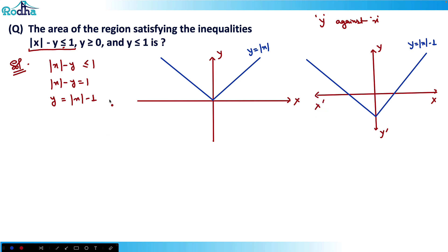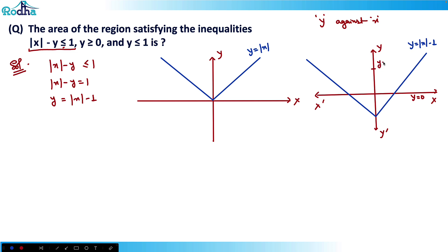Now there's the graph of y = |x| - 1. I need to see the portion where y ≥ 0 and y ≤ 1. y ≥ 0 means above the x-axis. y = 1 is a horizontal line, so the graph should be between y = 0 and y = 1. I need to find the area of this shaded region. If you observe, it is a trapezium.